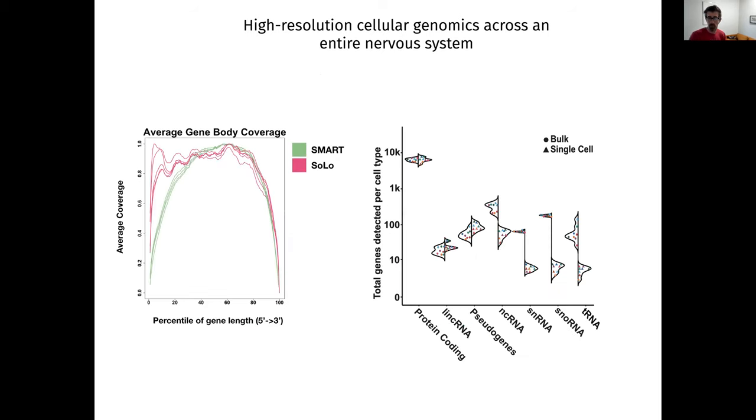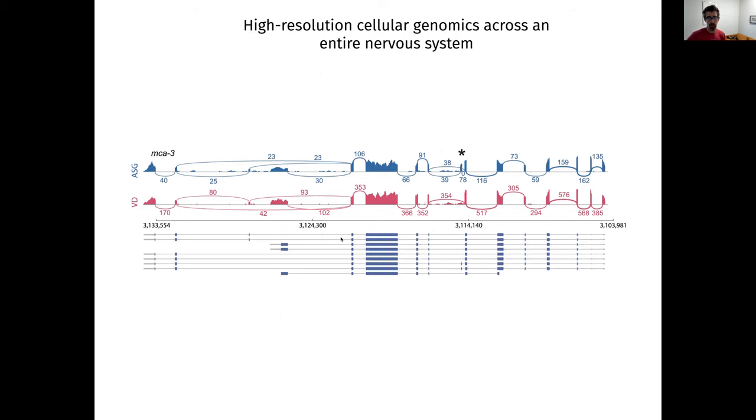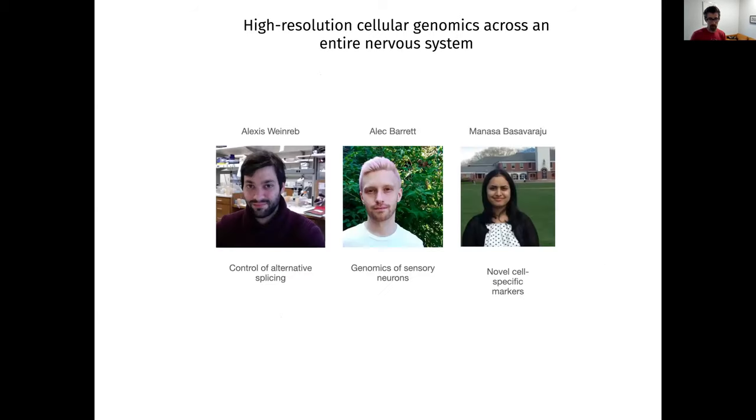We can also pool these sort of neurons and do bulk sequencing on them. This allows us to use ribosome depletion rather than poly A to build our libraries. So we can get coverage across the whole gene body as shown here in pink. We can look at non-coding RNAs and we can get information about alternative splicing. And so some current projects in the lab that look at that are from Alexis, looking at control of alternative splicing. Alec, looking at genomics and sensory neurons, which are a very diverse and cool set of neurons. And Manasif Basavarju, who's looking at developing novel cell-specific markers.